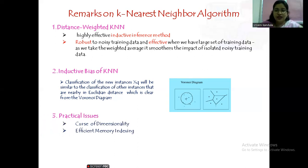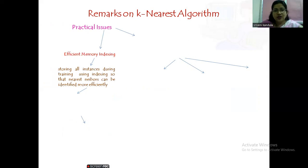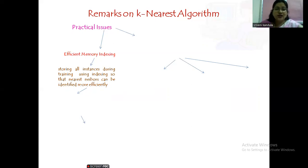There are two practical issues: dimensionality and efficient memory indexing. Starting with efficient memory indexing — in KNN, all instances are stored during training. In the training phase we simply store all the data without training the algorithm, and during classification we retrieve and classify based on stored data. For efficient access, the data must be indexed so that nearest neighbors can be identified efficiently in a shorter time.